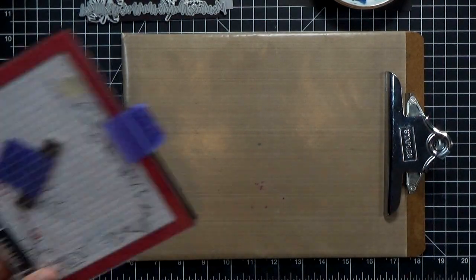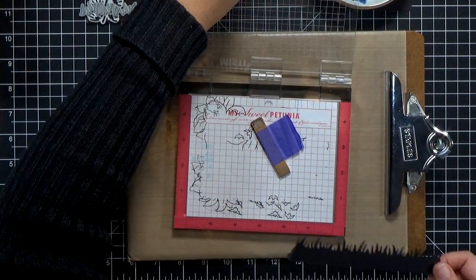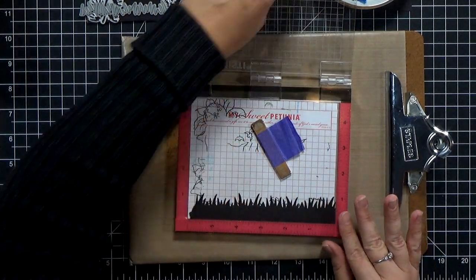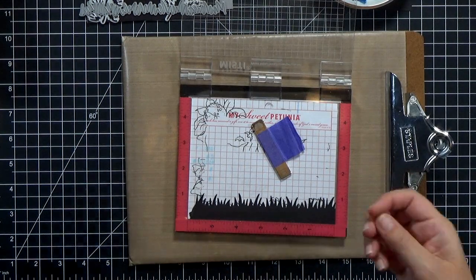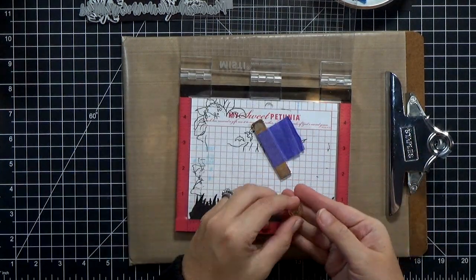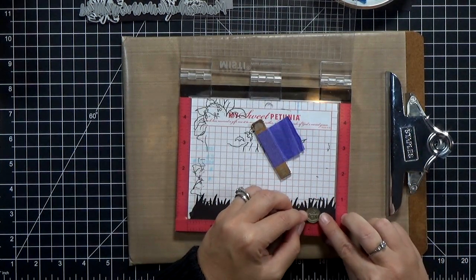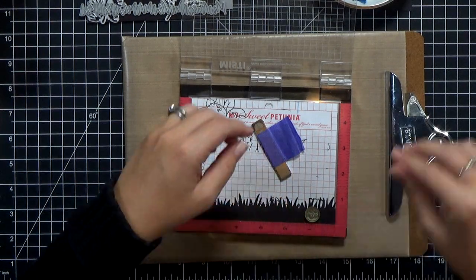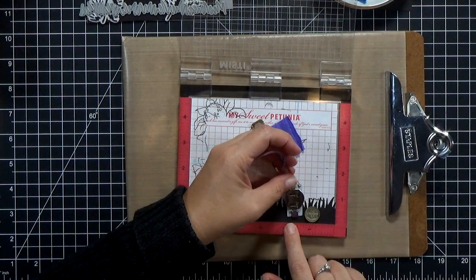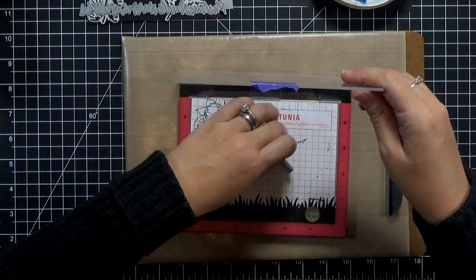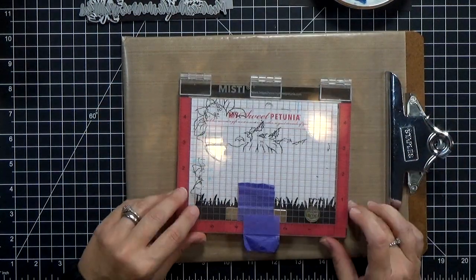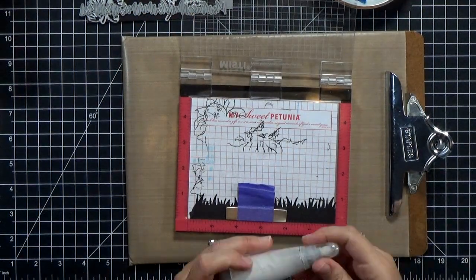Now before we go too much further, I want to stamp Push Here on my card. I opted not to put any other sentiment on the front. And I haven't decided if on the inside I'm going to stamp Happy Halloween or Boo, so I haven't actually finished the inside of the card yet. But I didn't want a sentiment on the front. I just wanted the spooky eyes. So the only stamping I'm doing on this card is the words Push Here down at the bottom on the grass.